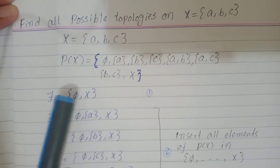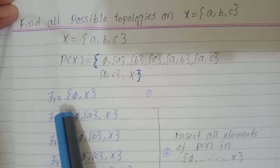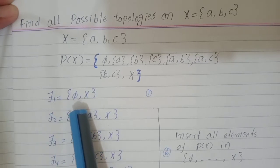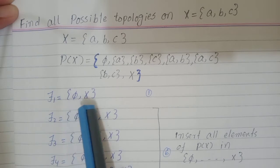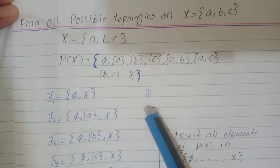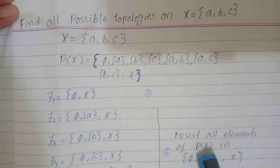Our first topology is τ1, which is the trivial topology, consisting of just two elements: φ and X. For the next six topologies we insert elements of the power set of X into the set {φ, X} one by one.